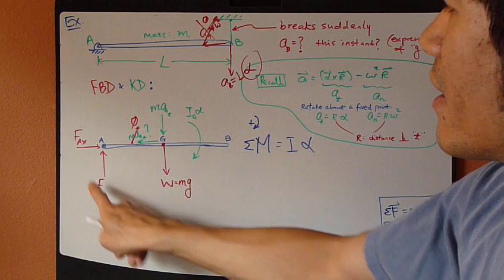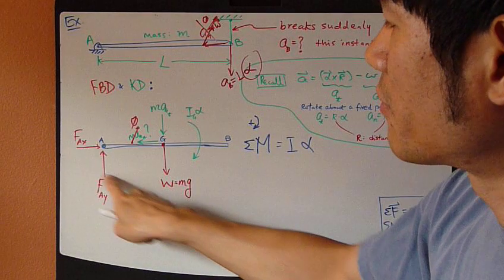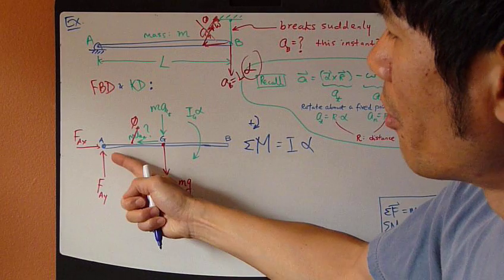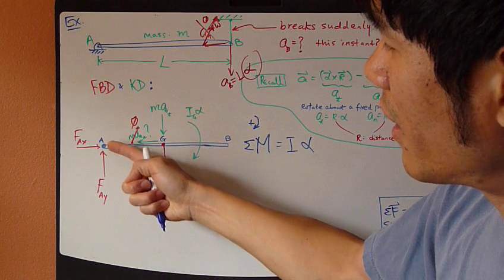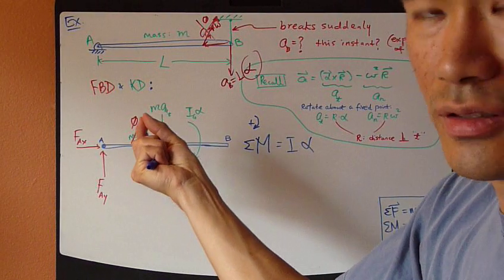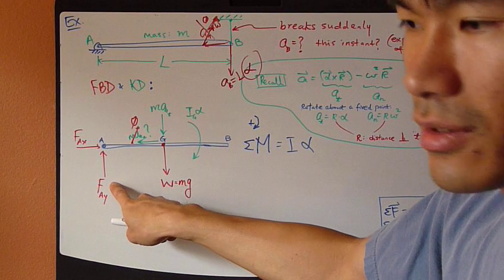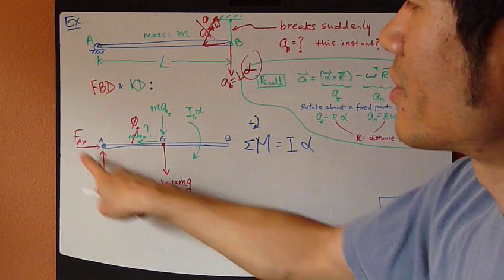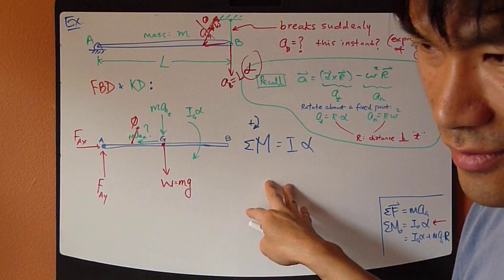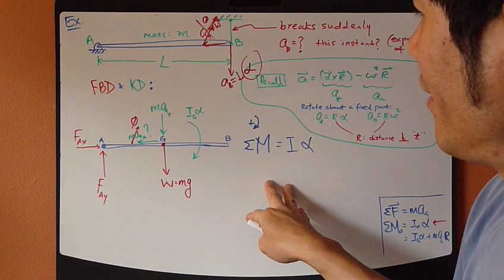So, you do want to take the point where there are some forces going through the point. For example, point A. So, we have these two reaction forces going through it. So, the moment arm between, let's say, this force and this point A is zero. Therefore, force times zero is zero. This means that these two forces will drop out of this equation, which is nice.